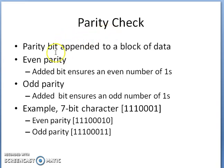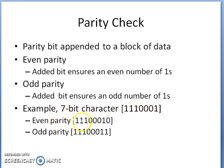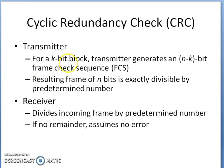One error detection scheme is parity check, where a parity bit is appended to a block of data. There are two types: even parity and odd parity. In even parity, the added bit ensures an even number of ones in the message block. For example, a seven-bit character 1110001 has an even number of ones, so its parity is even. You can make it odd parity by ensuring the number of ones is odd.